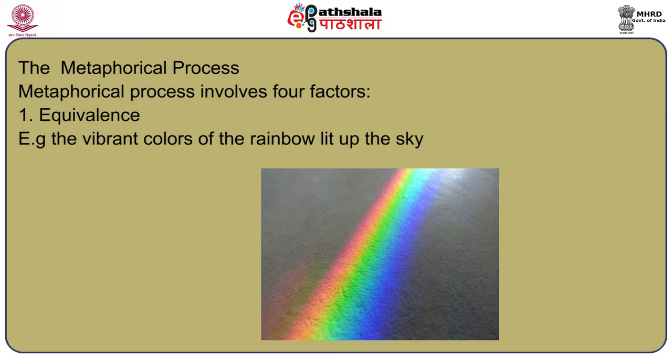Now let us look at the metaphorical process. What is the process by which a metaphor comes about? Metaphorical process involves four factors. One: equivalence. A metaphor sets up equivalence between two verbal signs irrespective of the grammatical structure of a metaphorical expression. For example: 'she is all states and all princes I.' The equivalence between 'she' and 'states,' or between 'I' and 'princes,' is explicit, but may not always be so.